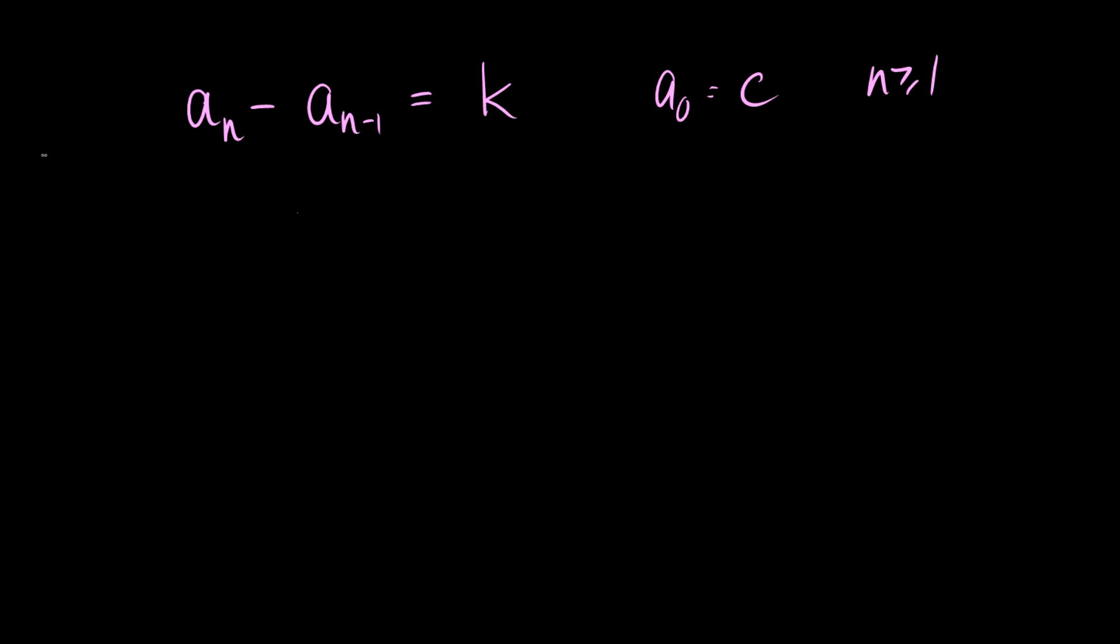If we ever have any relation of this form, this is equal to... So a_n is going to be equal to a_0 plus the sum as i goes from 1 to n of k.